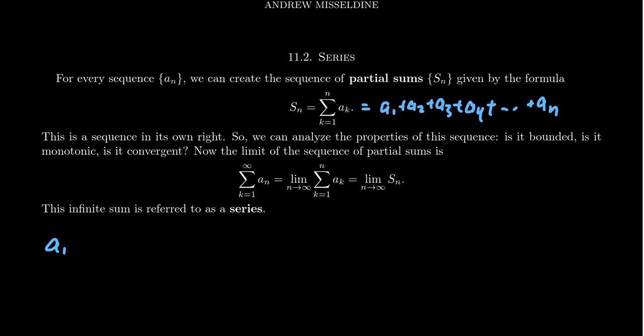We could take the sequence a sub n equals 1 over 2 to the n. So this is supposed to be a sequence. And so our sequence would look like 1 half, 1 fourth, 1 eighth, 1 sixteenth. You get the idea there.